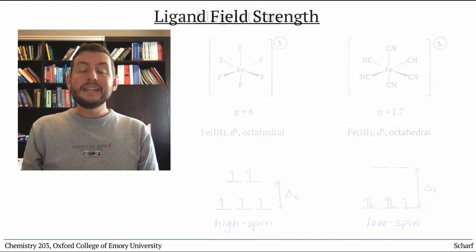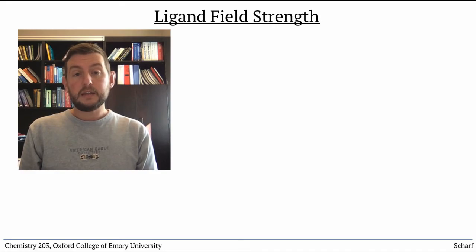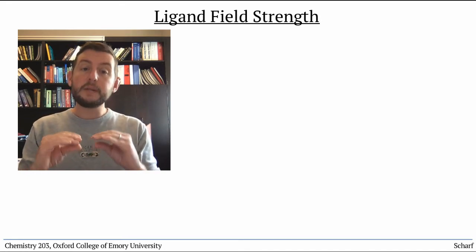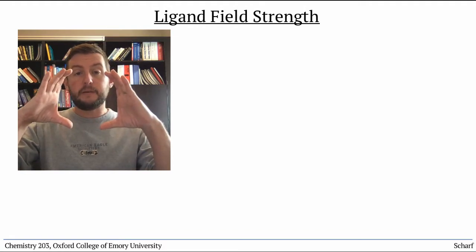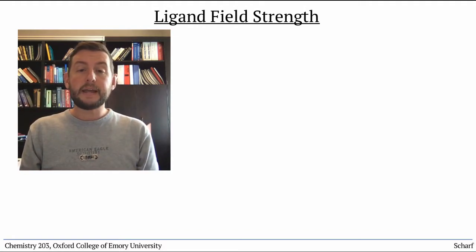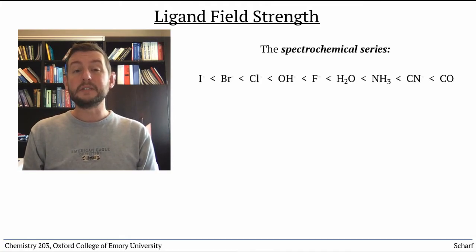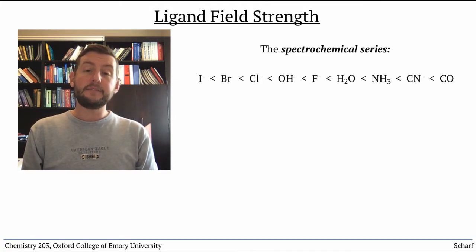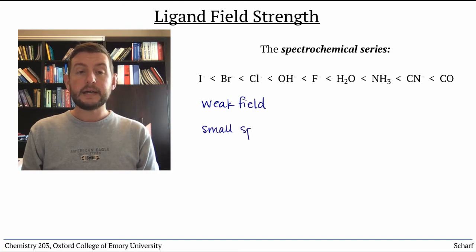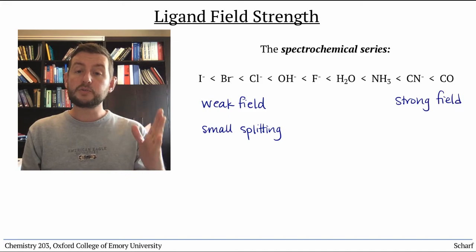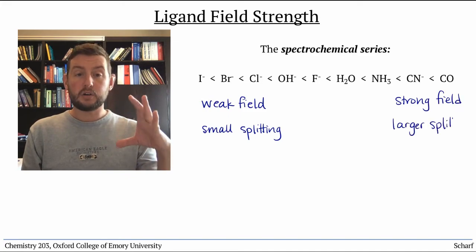A property called ligand field strength is what determines whether a particular ligand causes smaller splitting or larger splitting. Ligands are ranked by their ligand field strength according to the spectrochemical series, where those ligands on the left are called weak-field ligands and they cause small splittings, while those on the right are called strong-field ligands and cause large splittings.